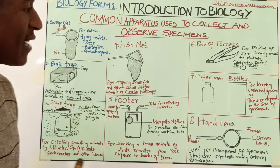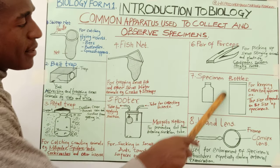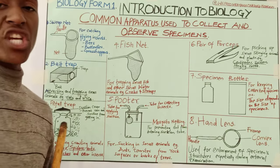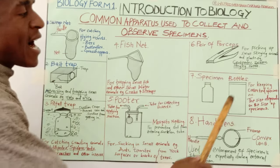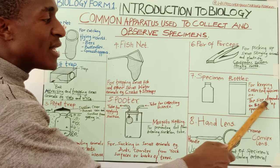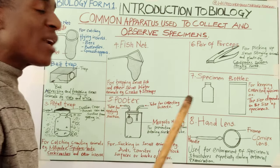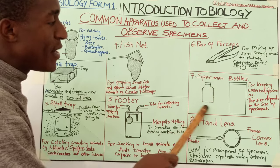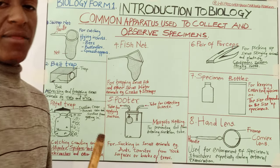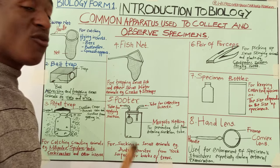Number seven, specimen bottles. Two specimen bottles are shown — one smaller and one bigger, and they look different in terms of shape. Specimen bottles are for keeping collected specimens, and the size depends on the size of the specimen. The smaller the specimen bottle, the smaller the organism being preserved. The larger the specimen bottle, the larger the specimen that has been collected for study.